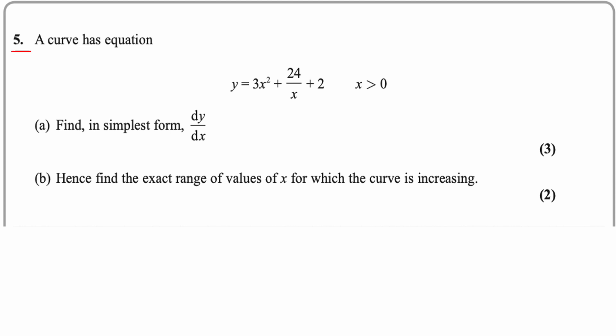This is question number five from the May 2019 Edexcel AS Pure Mathematics paper, relevant for Year 12 and Year 13 students in the UK. A curve has equation y = 3x² + 24/x + 2, where x must be greater than zero — it can't equal zero because that wouldn't satisfy the equation. For part (a), find dy/dx.